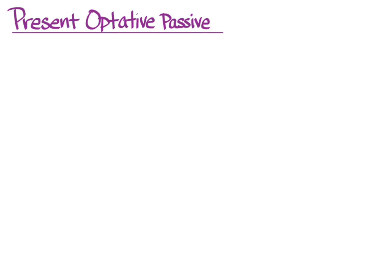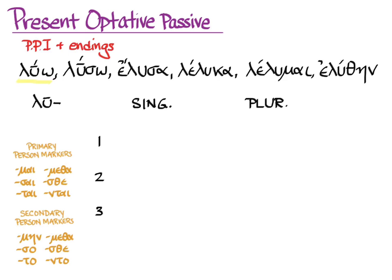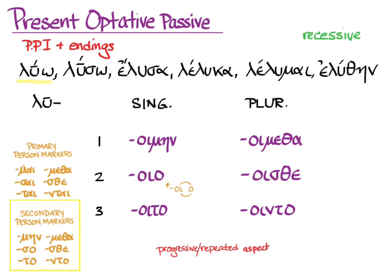Let's move on to the optative. First principal part, as with all things present, and endings — we need the first principal part without the omega. This time those passive person markers will come in handy. Optative is for secondary sequence, so we'll use the secondary person markers. Combined with the omicron of the present tense and the iota of the optative, you get: oimane, oya — where the intervocalic sigma has dropped out of oysa but nothing gets contracted — then oita, oimetha, oista, and ointah. Accent is recessive, progressive repeated aspect, and we have no default translation without context.